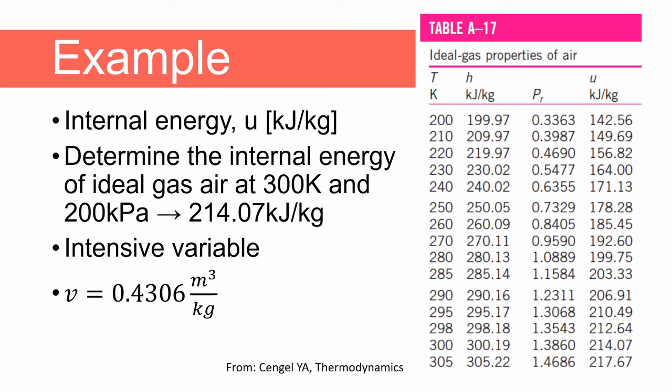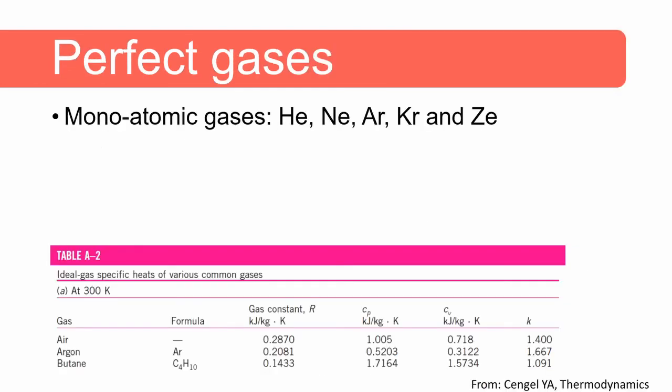As air is a single-phase system, specifying two independent intensive variables allows us to determine the others, as shown above. Note, however, that internal energy and temperature for an ideal gas are not independent from each other. If asked to determine the specific volume of air at 300 Kelvin and an internal energy of 214.07 kilojoules per kilogram, we would not be able to do so, because internal energy and temperature are a function of each other — they are interdependent.